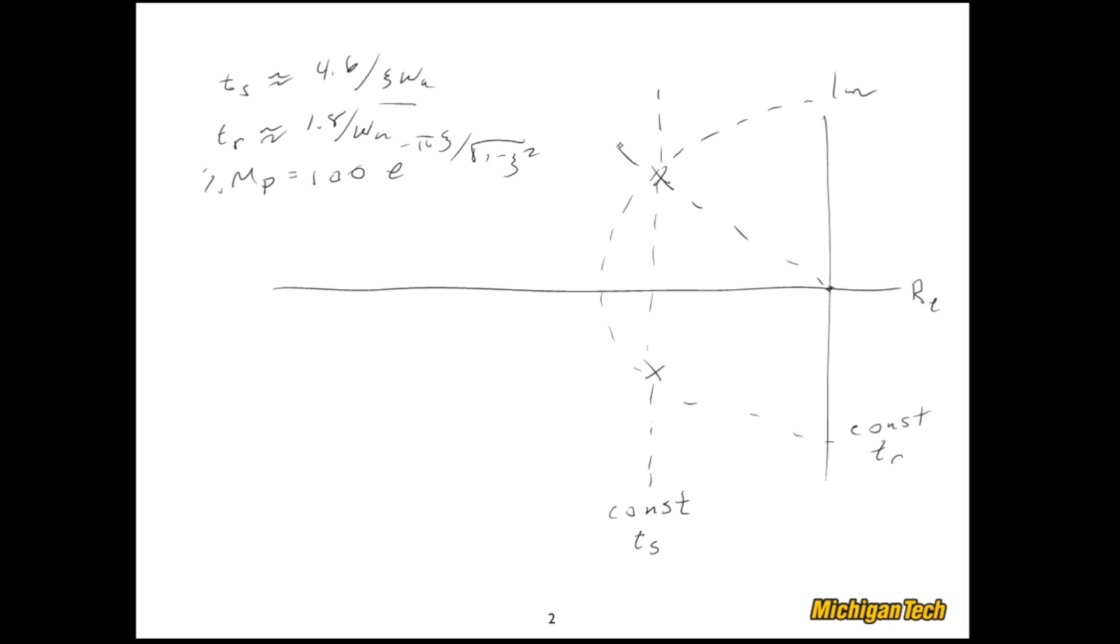So if I draw these diagonal lines out like so through the poles and I'll make the poles a little bit bolder now, those lines are constant percent overshoot.